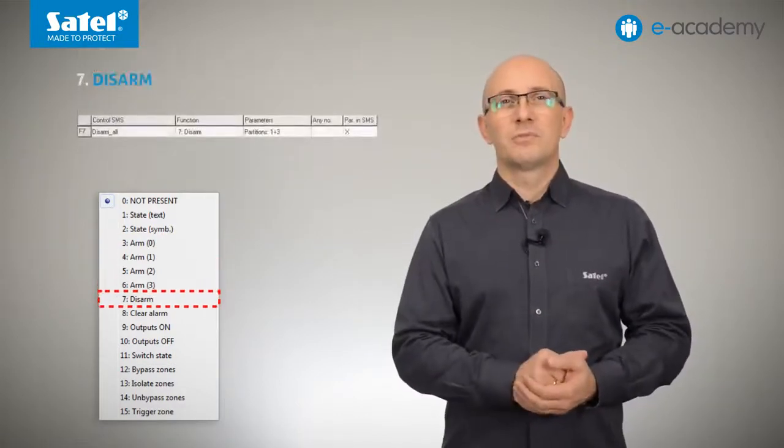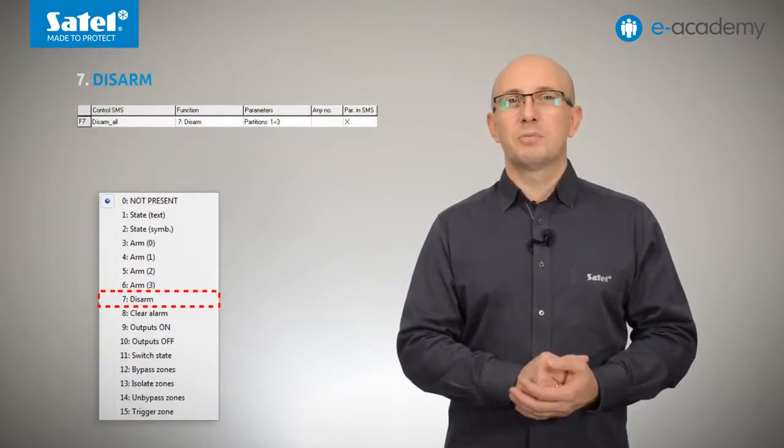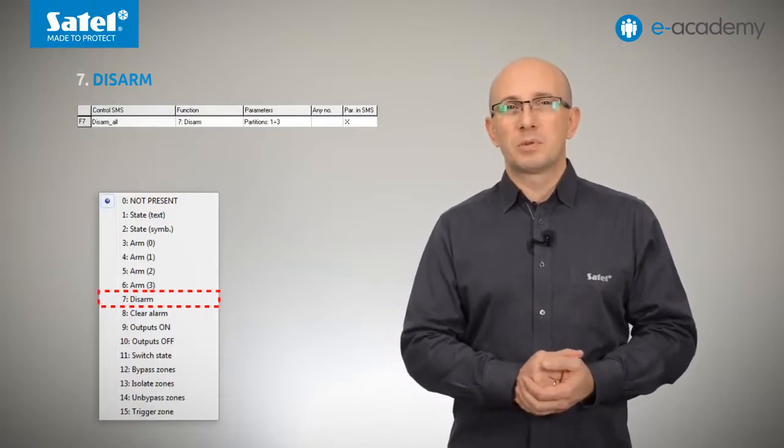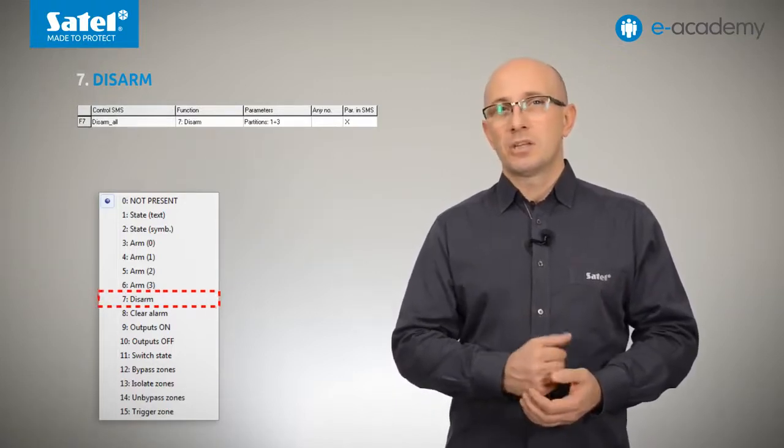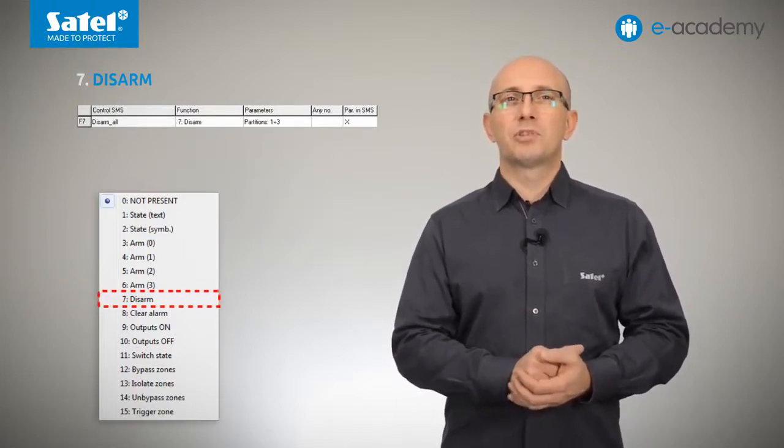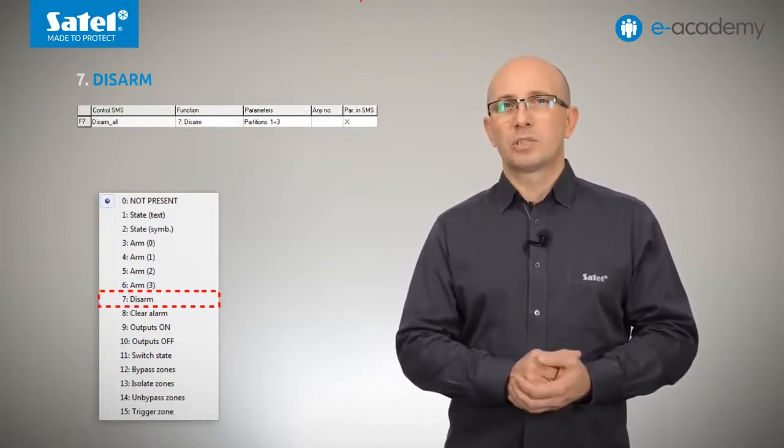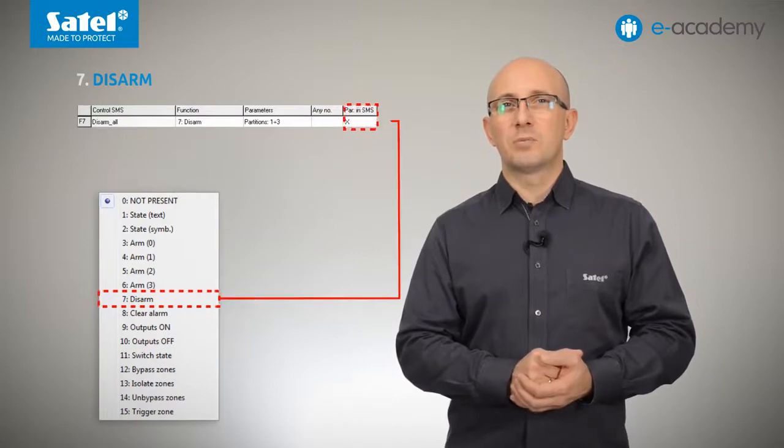Function seven is disarming. You can choose the partitions the command will apply to. I will choose disarming all partitions with one command. However, if for some reason you will have to disarm the selected partitions only, here is how to do so. During the configuration, check the parameters in SMS field.